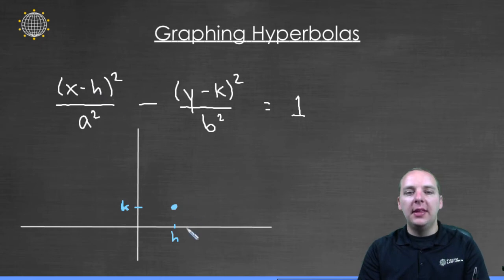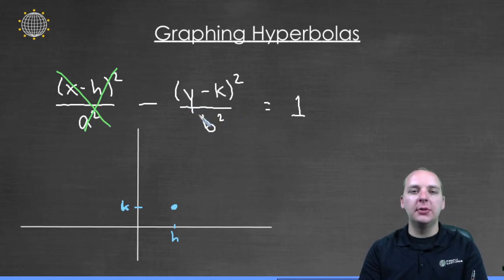If x equals h, then you're right here and you're looking for the y value that will make the equation equal one. But if x is h, this term is zero.